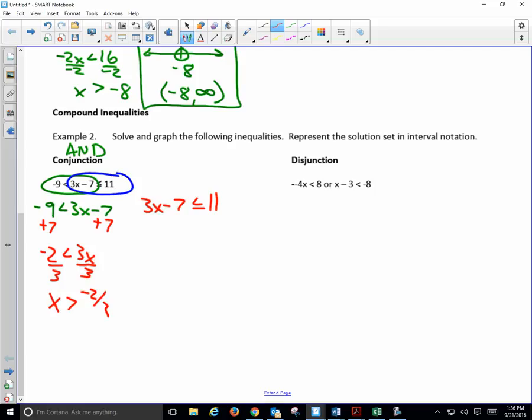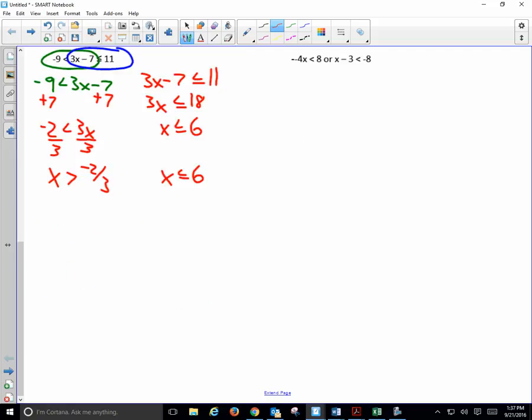And then the next one that I grab is that 3x minus 7 is less than or equal to 11. Negative 2 is less than 3x divided by 3. So I have to flip the sign, but I'm dividing a negative number. But I'm not dividing by a negative number, right?